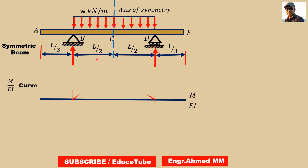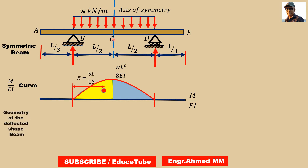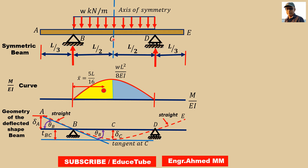It is a symmetric beam because both the beam and its loading are symmetric with respect to the vertical axis of symmetry at midpoint C. The slope of the elastic curve is 0 at mid span, and the tangent line at this point is horizontal.